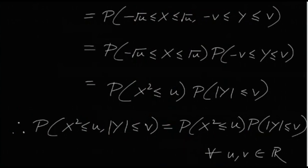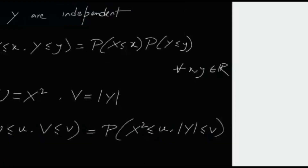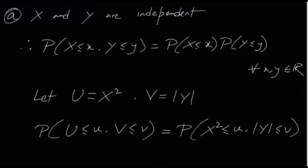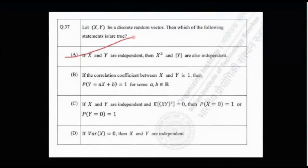It follows immediately that if X and Y are independent, then any function of X is also independent of any function of Y. I've shown the proof to keep it rigorous. So option A is true.